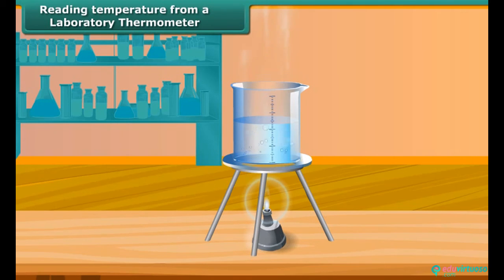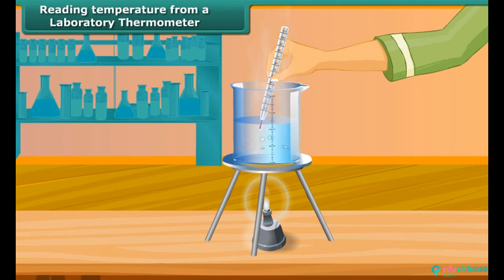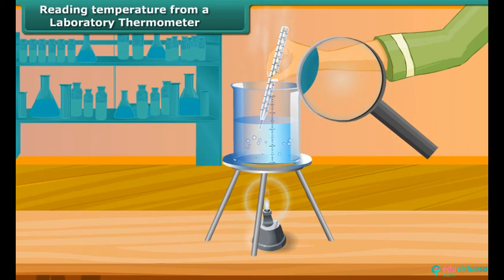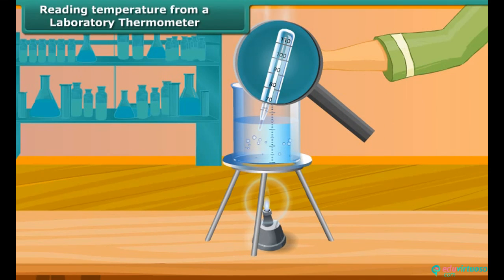Let us now measure the temperature of hot water kept in a beaker. Take a laboratory thermometer and immerse the bulb of the thermometer in the hot water. Observe the shining thread of mercury moving up in the thermometer tube. After some time, the mercury thread will stop rising and stand at one place. Read the temperature on the thermometer tube which corresponds to the top of the mercury thread — this is the temperature of the hot water.